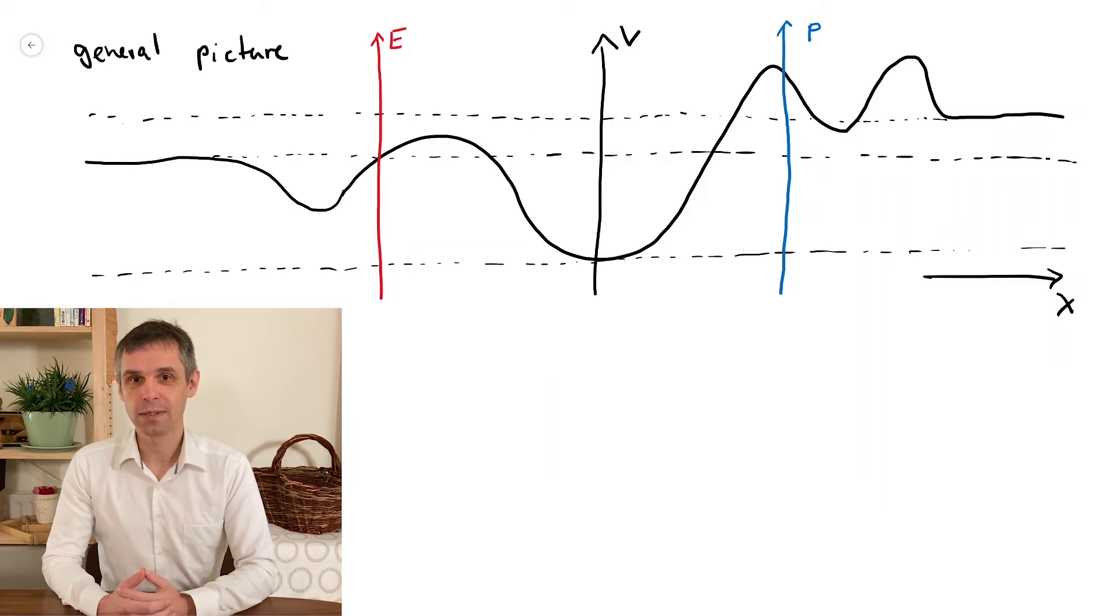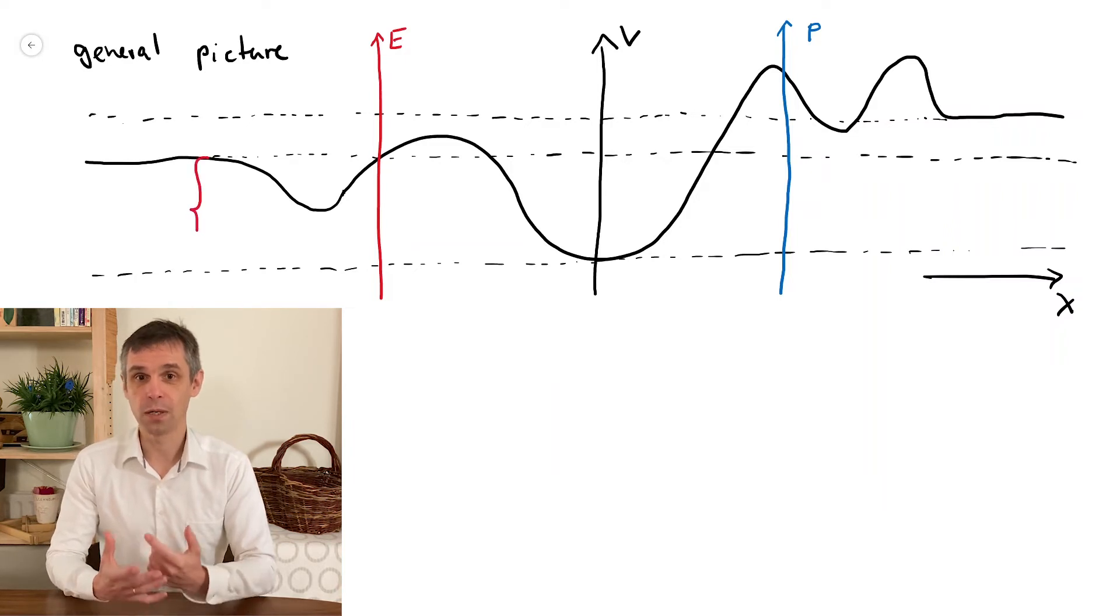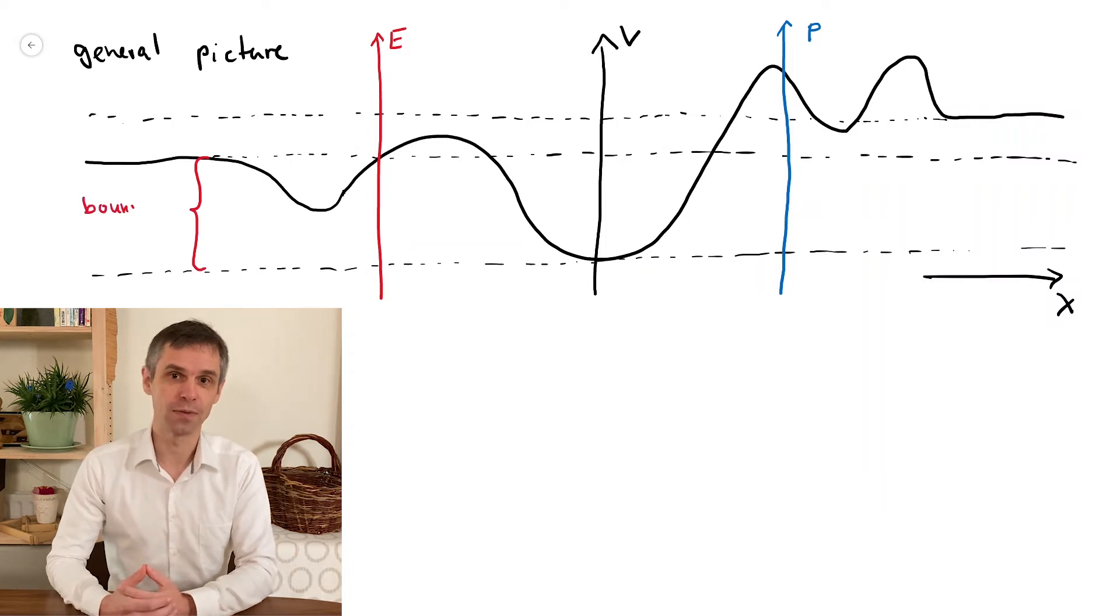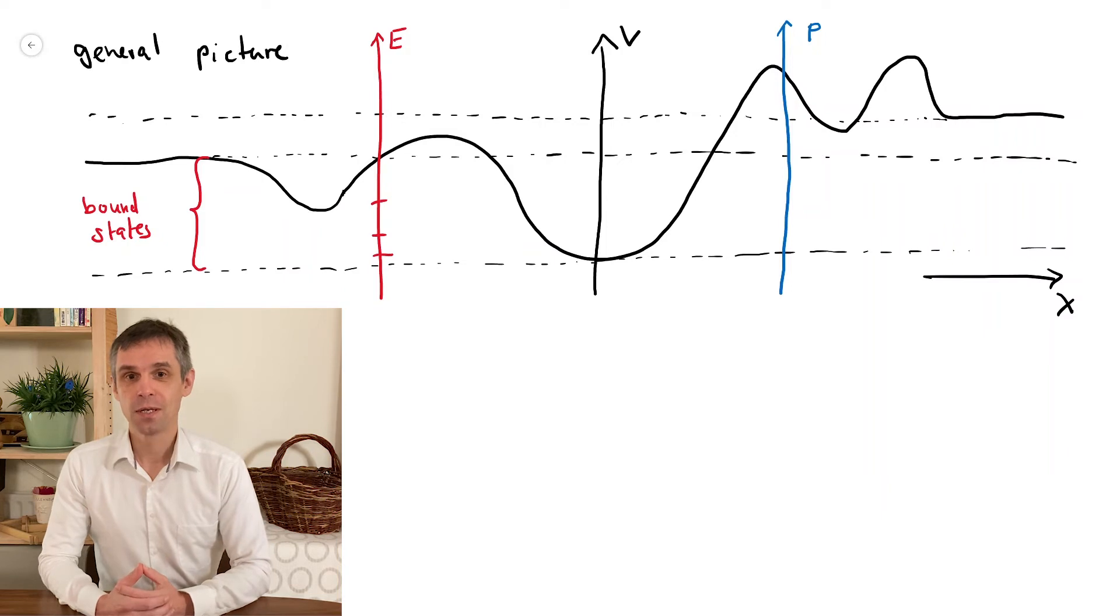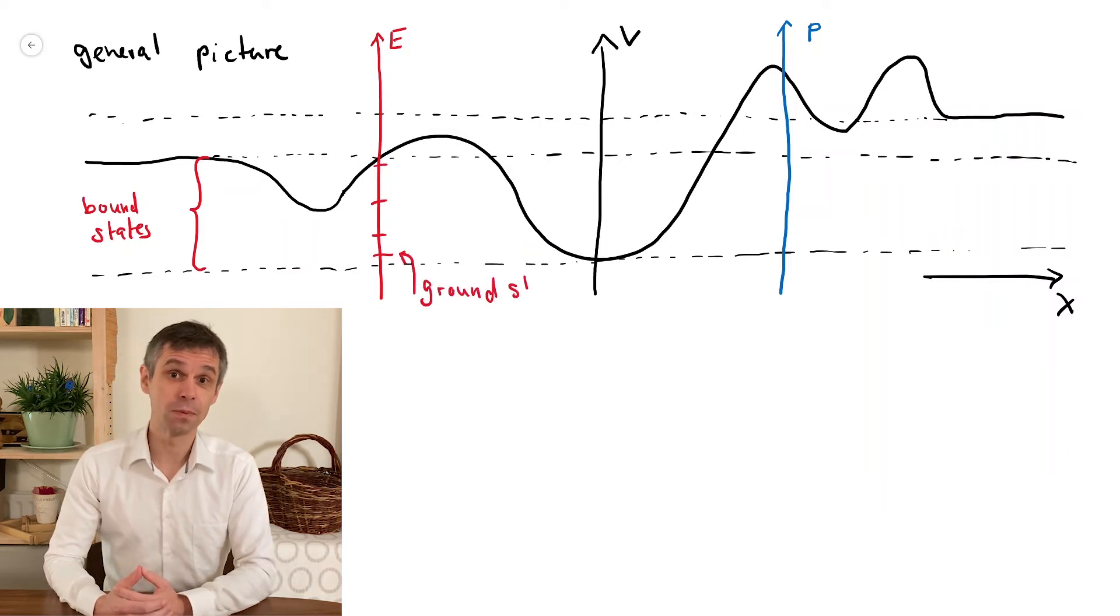Now, our general boundary conditions guarantee that we can only find so-called bound states below these asymptotic values. This is the region where energy quantization occurs, with the lowest state being the ground state, always with an energy above the global potential minimum.